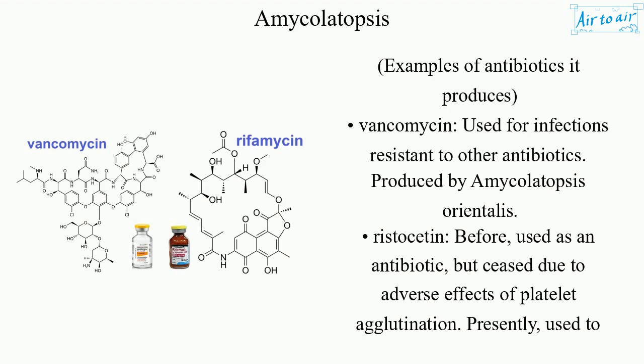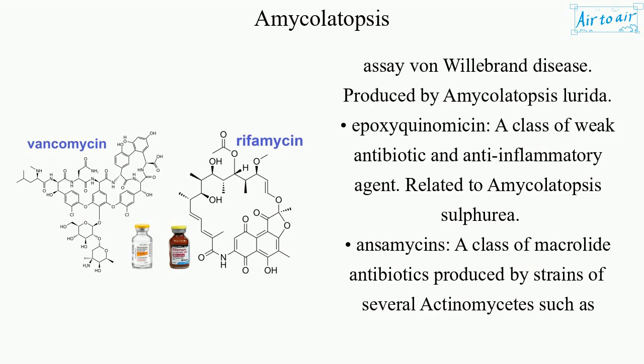Ristocetin was formerly used as an antibiotic, but ceased due to adverse effects of platelet agglutination. Presently, it is used to assay von Willebrand disease. Produced by Amycolatopsis lorida.